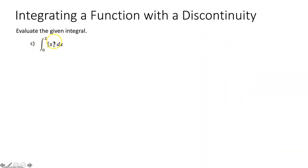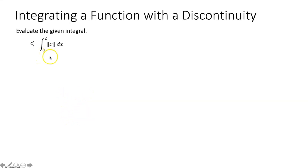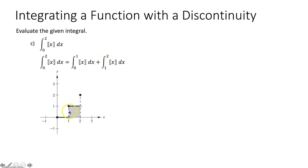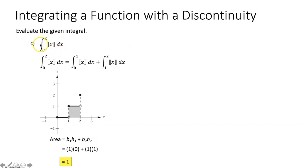Part c evaluates the integral from zero to two of the greatest integer (step) function. This parent step function consists of horizontal lines that change at every integer x value. From zero to one the function equals zero; from one to two it equals one. We split the integral into the integral from zero to one plus the integral from one to two. The first rectangle has base one and height zero; the second has base one and height one. Simplifying, this definite integral equals one.